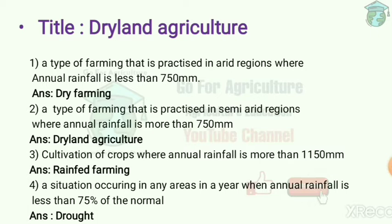The problems in dry farming are crop failure and prolonged dry spells, and the solution is an alternate land use system. Next question: a type of farming practiced in semi-arid regions where annual rainfall is more than 750 mm is called dry land farming. The problems in dry land farming are dry spells and moisture deficit.